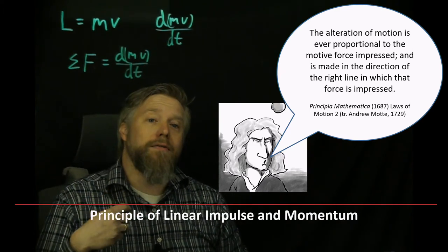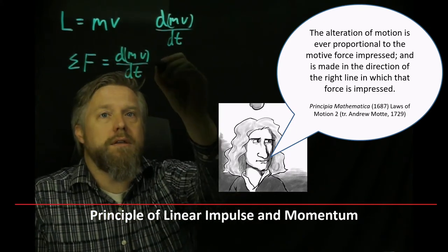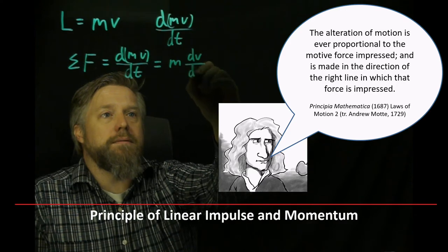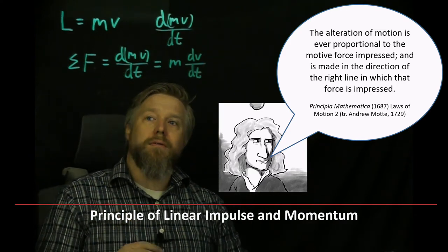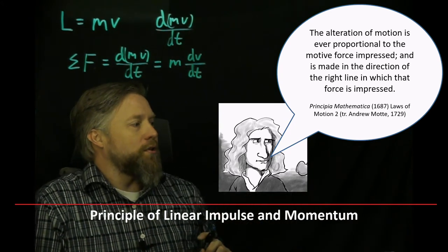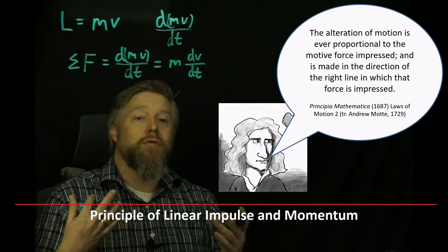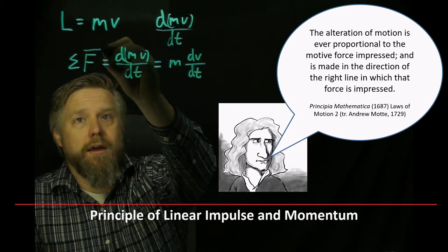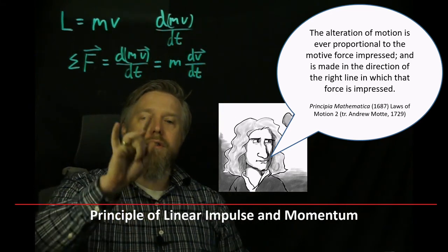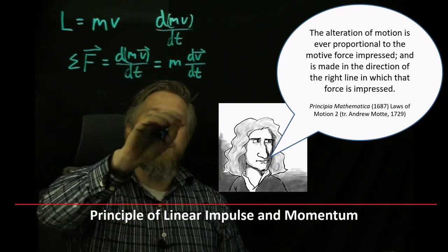Now, in the case of a constant mass, we could take that mass out and multiply it by dv/dt. And you can see that we get the sum of the forces is equal to mass times dv/dt. And dv/dt, as we know, is acceleration — so we have F equals MA, which is where that comes from. However, the second line is also very important: 'and is made in the direction of the right line in which that force is impressed.' That's telling us the direction is important, and basically saying that this is a vector equation, and that we need vectors on our force and our velocity.